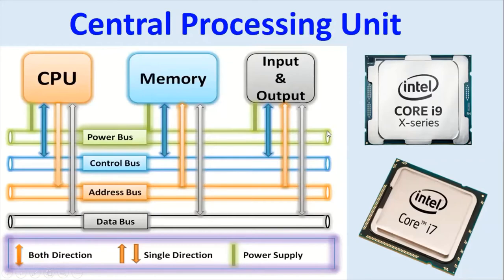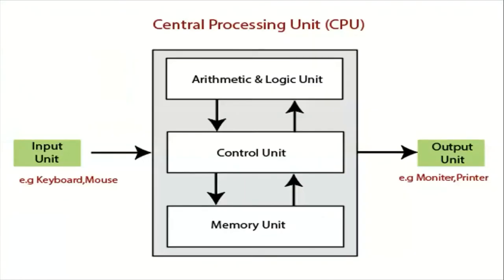The CPU has different parts: the arithmetic logic unit, the control unit, and the memory unit. Data enters the CPU through input devices — the most common being keyboard, mouse, and microphone. Output is received from the monitor or printer. The monitor gives us a soft copy, while the printer gives us a hard copy. These are the output devices.